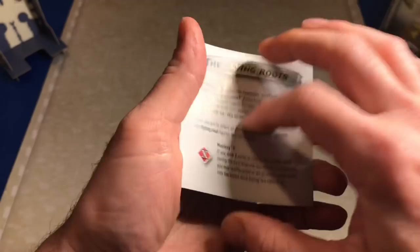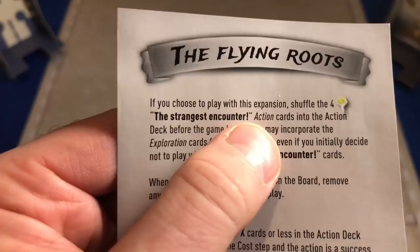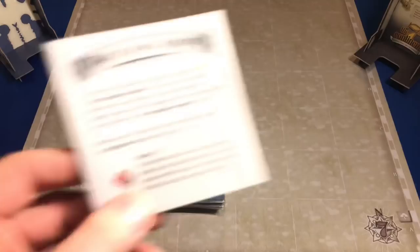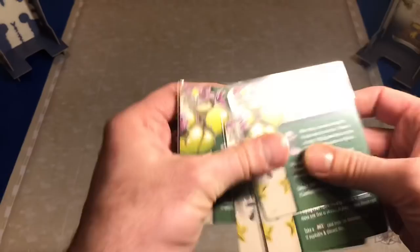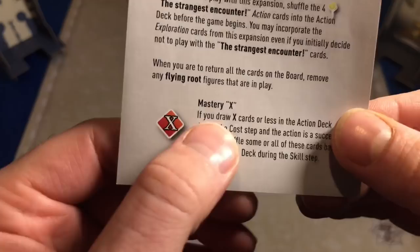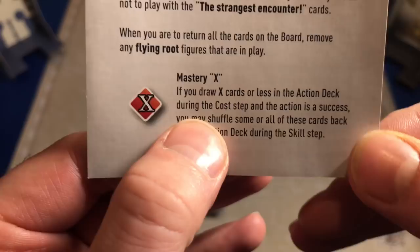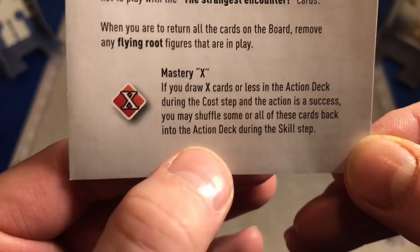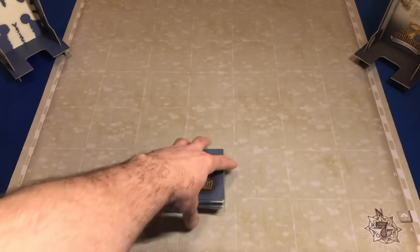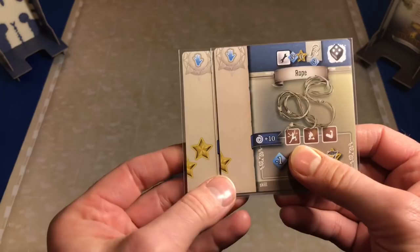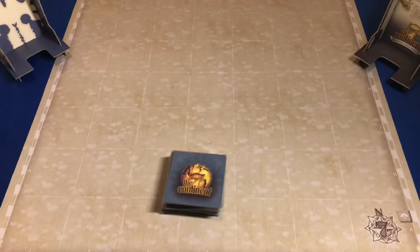The Flying Roots expansion says if you choose to play with this expansion, shuffle the four The Strangest Encounter action cards into the action deck before the game begins. I'm going to go ahead and do that. I'm just going to shuffle these right into this action deck. On the bottom, it shows something that's a little new to this expansion. It says Mastery X. If you draw X cards, where say this is a two here, if you draw two cards or less in the action deck during the cost step of an action and it is successful, I may shuffle some or all of those cards back in the action deck during the skill step.